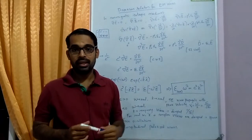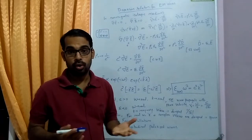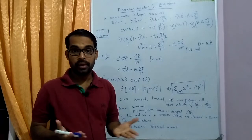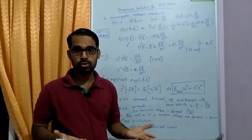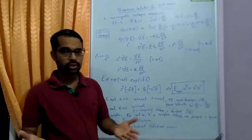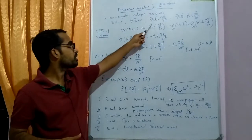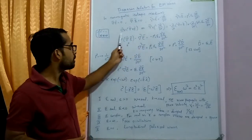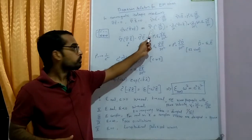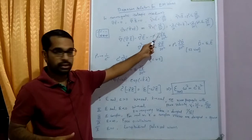Now we derive the dispersion relation — the equation connecting omega and k, where omega is the frequency and k is the wave vector related to wave number. We take the curl operation on the third Maxwell's equation: del cross del cross E = del cross (minus dou B by dou t).